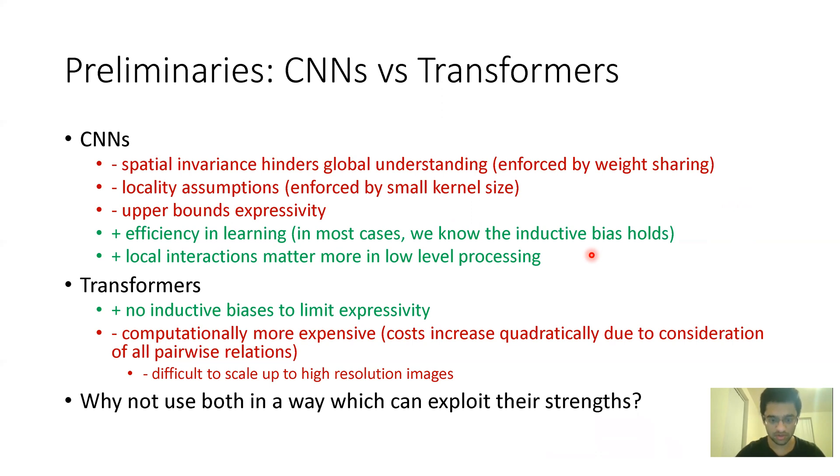On the other hand, transformers have no inductive biases, so their expressivity has no limit in some sense. However, they're more computationally expensive to train because they don't have inductive biases. More particularly, their cost will increase quadratically because they consider all pairwise relations. They compute attention scores between all pairs of elements in the input sequence. Their cost increases quadratically with the sequence length, which is bad, especially if you want to generate higher resolution images. So their method gets best of both worlds.